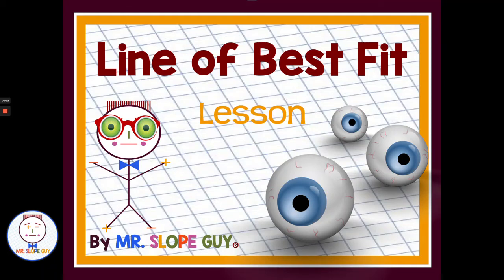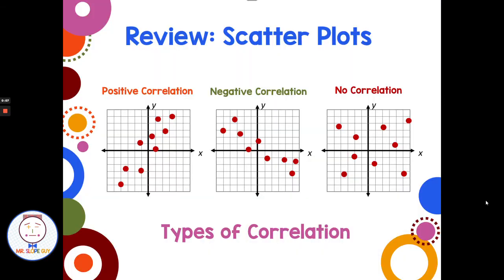Today we're going to look at eyeballing and estimating lines of best fit. Reviewing scatter plots: a positive correlation looks like points going up from left to right, while points going down from left to right show a negative correlation. If points just look random over the coordinate plane, we say there's no correlation or no relationship.